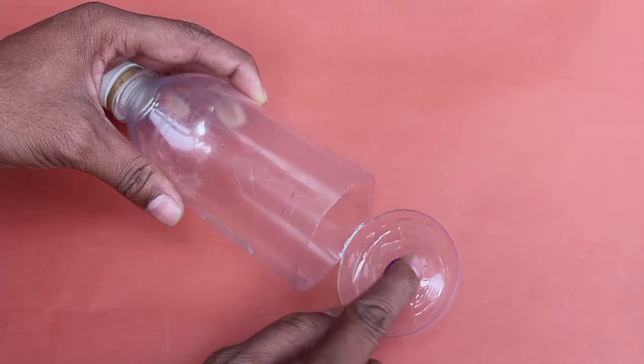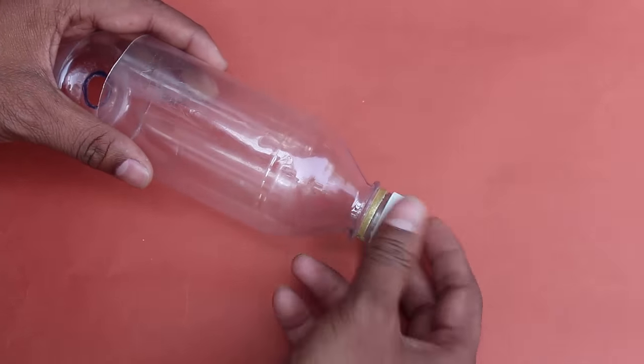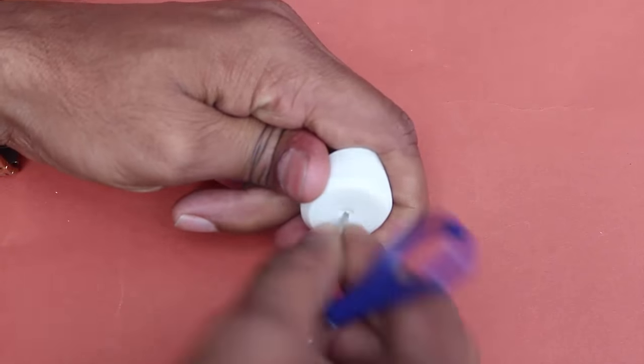Take a round bottle without any ridges and cut it about 1 cm from the base. Make a 2 cm hole in the bottle base.